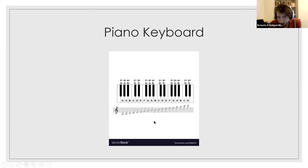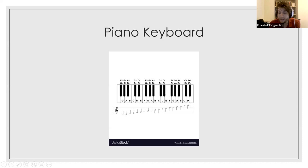This is a piano keyboard. You'll first recognize that there are white keys and black keys. The black keys on the keyboard are grouped in groups of three and groups of two, and they alternate — three, two, three, two — all across the keyboard. The note C is very easy to recognize because it's just below the first black key of the group of two.